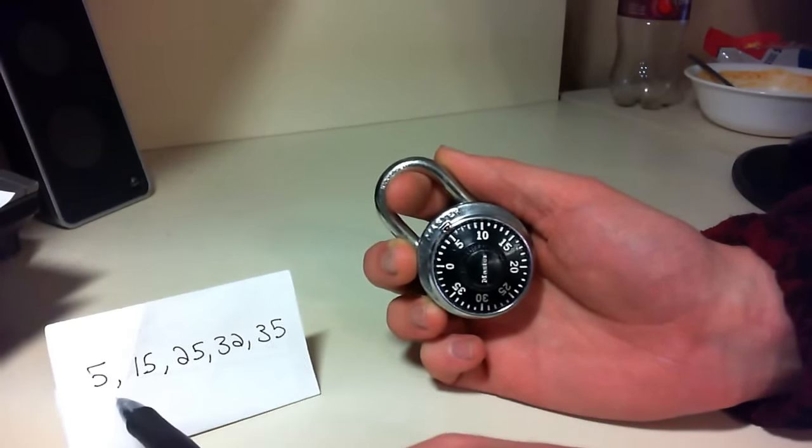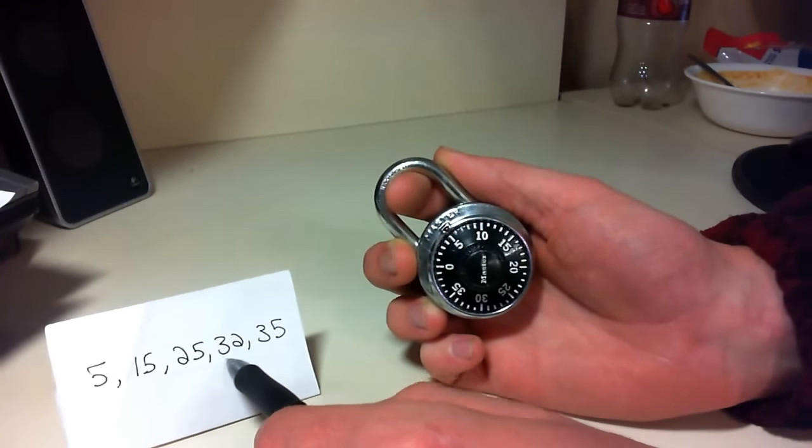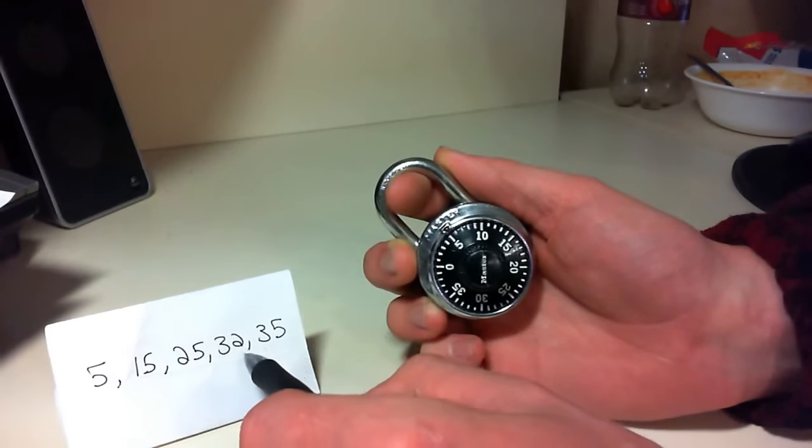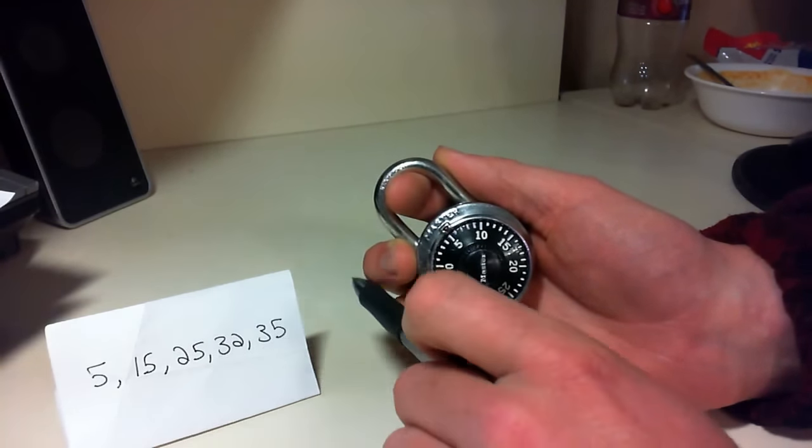And then there's going to be an oddball, and in this set of numbers, it's 32. And that is going to be your last number. So you combine the first number that you found with the second number that you found and the third, and that should be your combination.